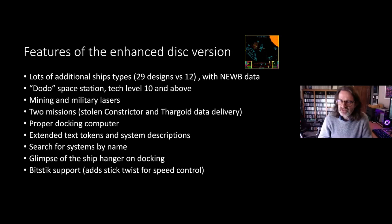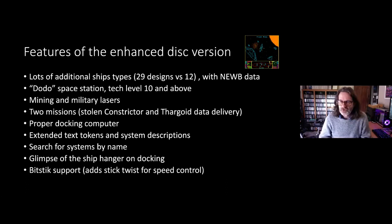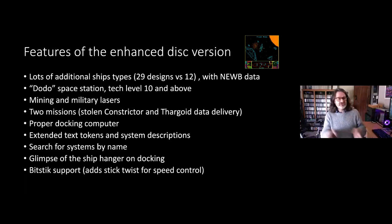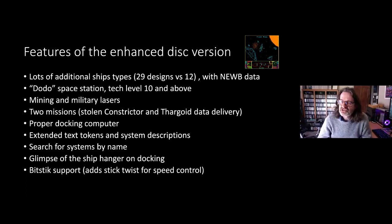Let's quickly run through the extra features of the disk and second processor versions on top of the cassette version. The cassette version is the base — but there are quite a few differences in the enhanced disk version. The disk version is probably the canonical version people remember most fondly. It had loads of additional ship types: 12 different designs in the cassette version and 29 in the disk version. Ships also come with an extra data byte called 'newbyte' in the source, which gives the AI routines a lot more information to do rather more sophisticated things, giving the disk version a much more immersive feel.